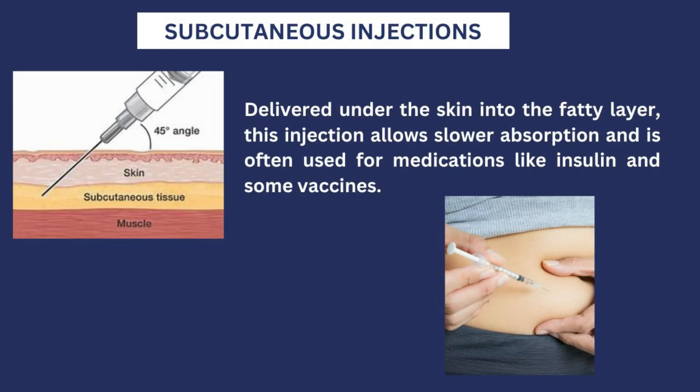Next, we'll talk about the subcutaneous injection, also known as subcut injection. Just as the name implies, this is an injection delivered under the skin into the fatty layer. This injection allows slow absorption and is often used for medications like insulin and some vaccines.